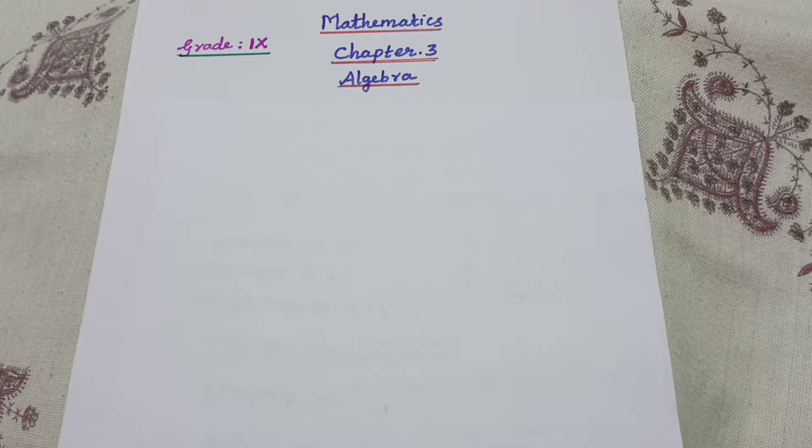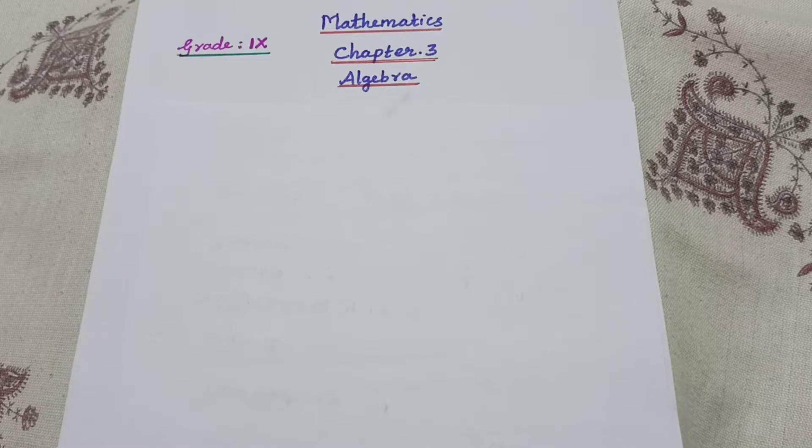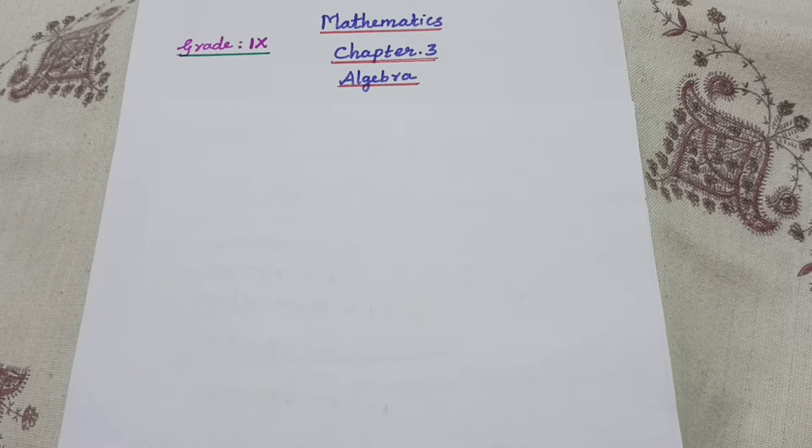Before we begin, last class I gave two homework questions. Take your homework and check the answers. Exercise 3.1, first question, second subdivision. The answer is polynomial. Which of the following expressions are polynomials, and if not, give a reason? In the second one, X squared times X minus 1 — here the power is positive, so it is a polynomial.